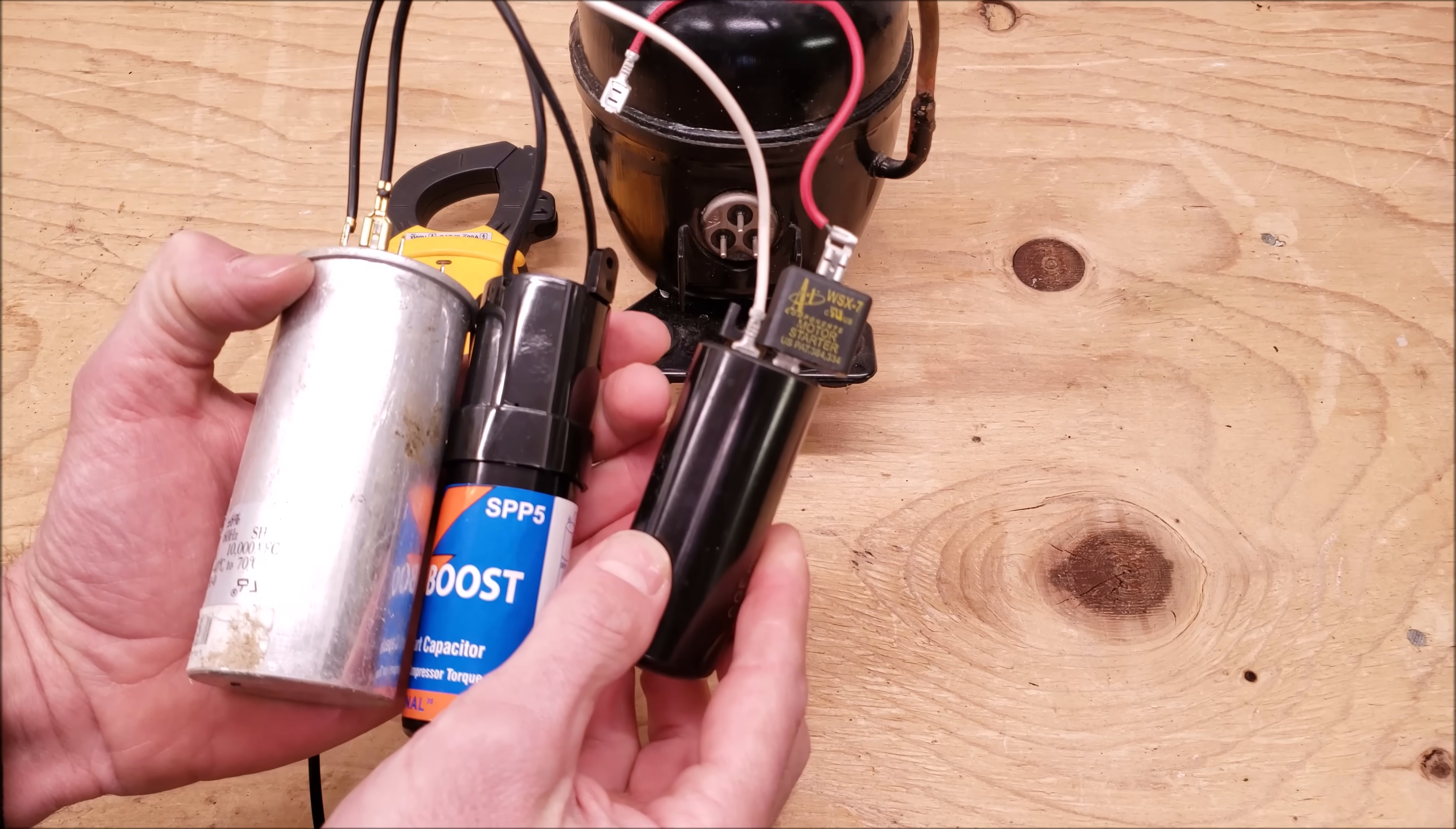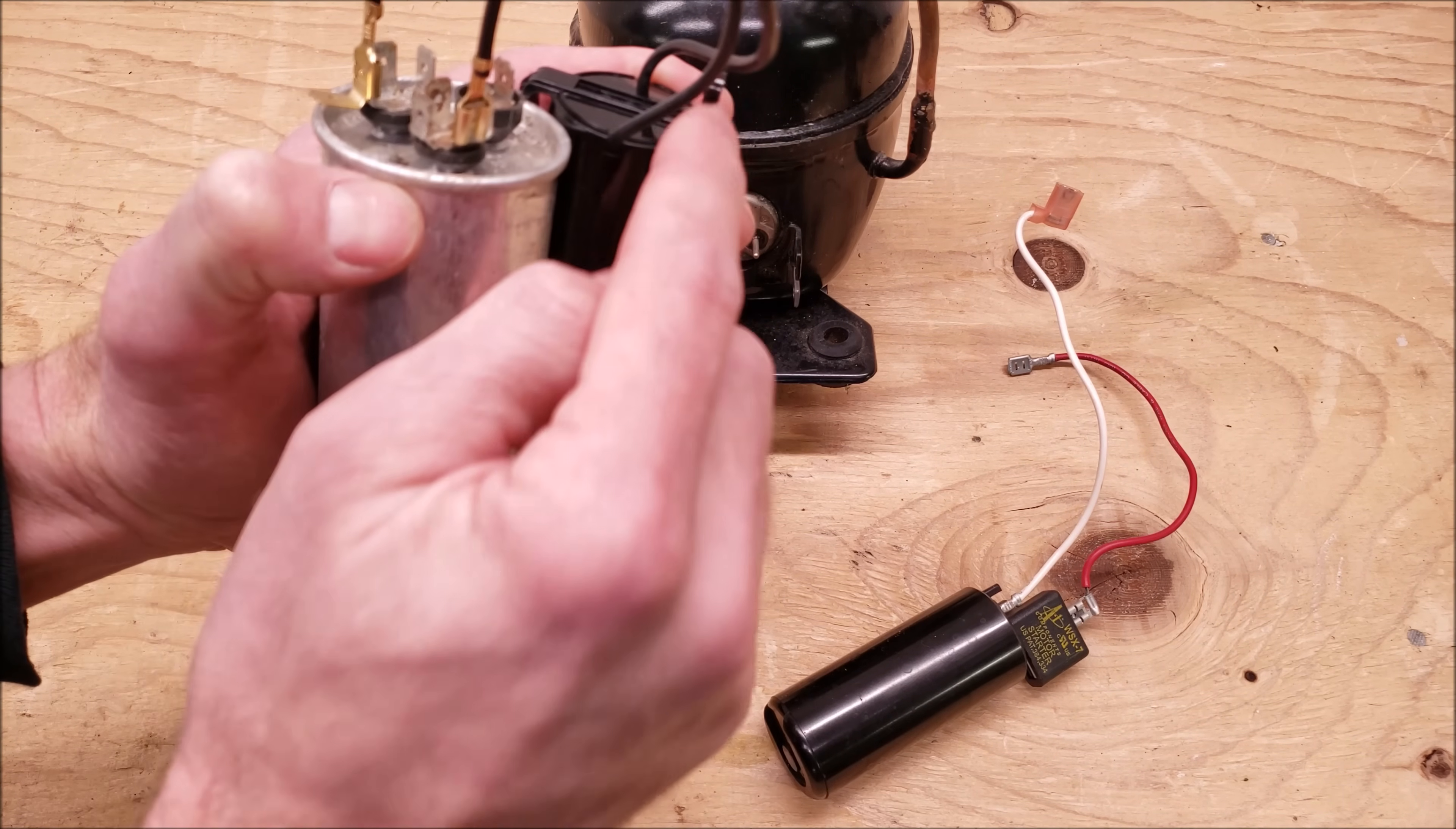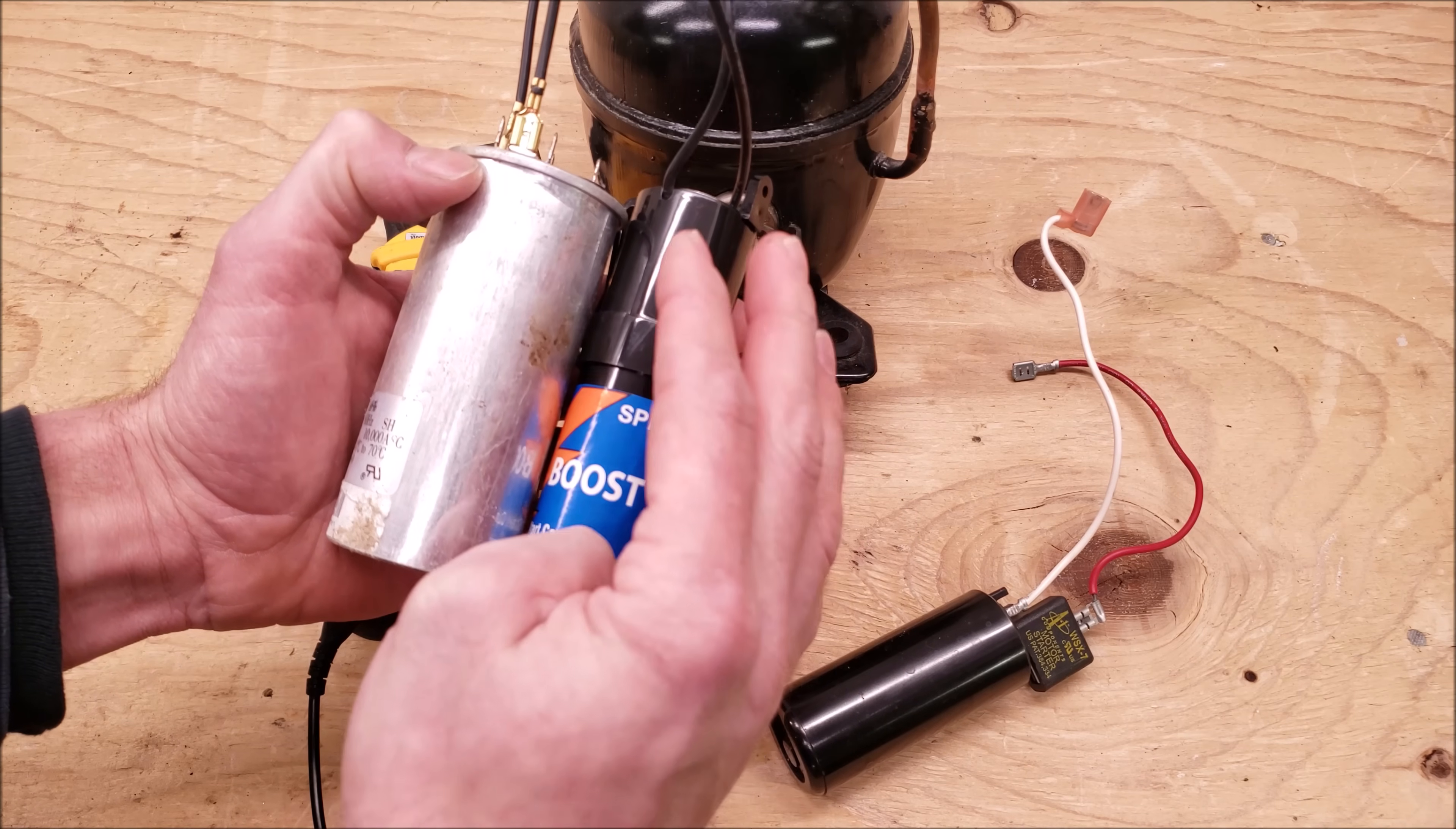In the case of the PTC thermistor used in the top of a start capacitor on like a hard start kit, basically what's happening is you have the wires connected to the C and also to the Herm. So the common and the Herm. And what's going to happen is it's going to take this start capacitor out of play once the compressor starts up.